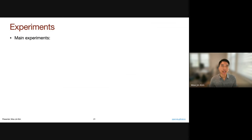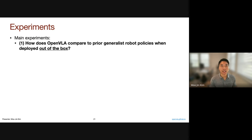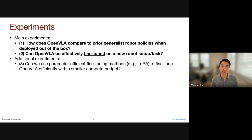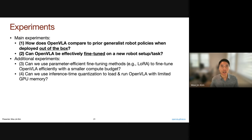The main experimental questions were: first, how does OpenVLA compare to prior generalist manipulation policies when deployed out of the box? Second, can OpenVLA be effectively fine-tuned on a new robot setup and/or task? We also have additional experiments: can we use parameter-efficient fine-tuning methods such as LoRA to fine-tune OpenVLA with a smaller compute budget? And can we use quantization at test time to load and run the model with limited GPU memory?